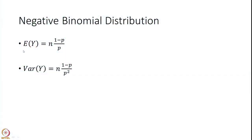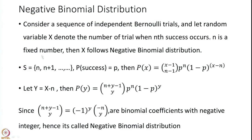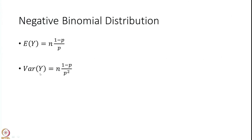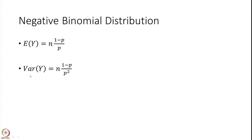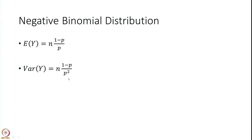For the negative binomial distribution, it is easier to calculate the expected value and variance of Y = X−n. The expected value of Y is n(1−P)/P and the variance of Y is n(1−P)/P². From these you can derive the expected value and variance of X.